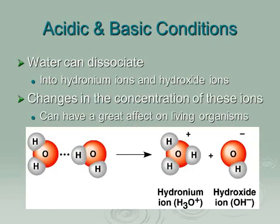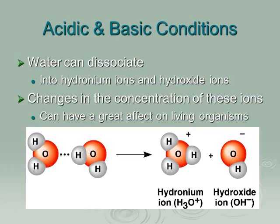To finish up, let's talk about acids and bases. If you've ever had a fish tank, you've probably dealt with water that was too acidic or too basic. Water can dissociate into two different types of ions — hydronium or hydroxide ions — and changes in the concentration of these ions can have a great impact on living organisms by affecting how acidic or basic the water becomes.